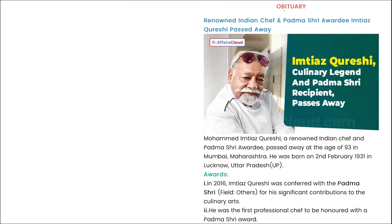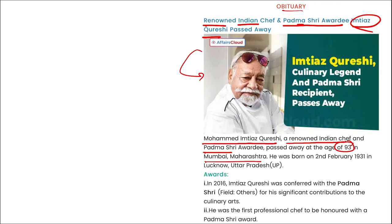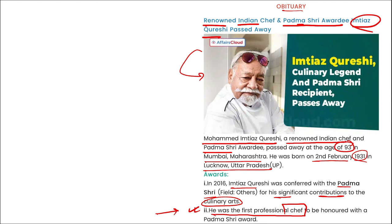Renowned Indian chef and Padma Shri awardee Mohammad Imtiaz Qureshi passed away at the age of 93 in Mumbai, Maharashtra. He was born on 2nd February 1931 in Lucknow, Uttar Pradesh. Imtiaz Qureshi was conferred Padma Shri for his significant contribution to culinary arts and was the first professional chef to be honored with the Padma Shri award.